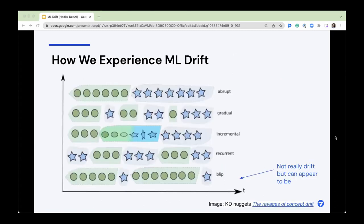So first, how you experience drift. There's abrupt drift — just an abrupt change. There's gradual drift where things are slowly getting worse. There's incremental drift, seeing different labels coming in and watching that slowly change. There's periodic drift, which is something recurrent, and we get a lot of questions about frequency and periodic drift. And then there are blips as well, which are more like outliers — not really drift, but often confused with drift, and you can use some of the same methods to look at it.